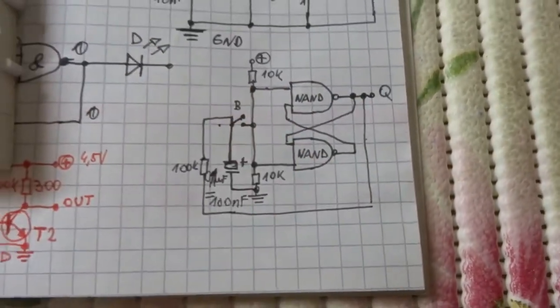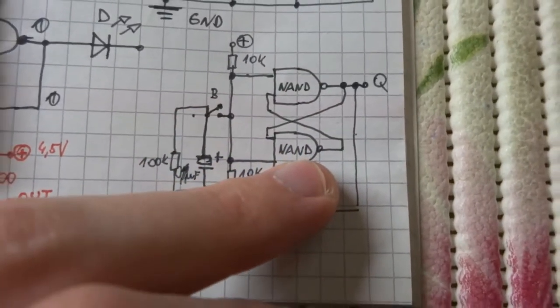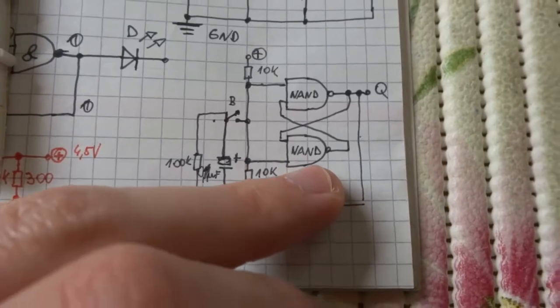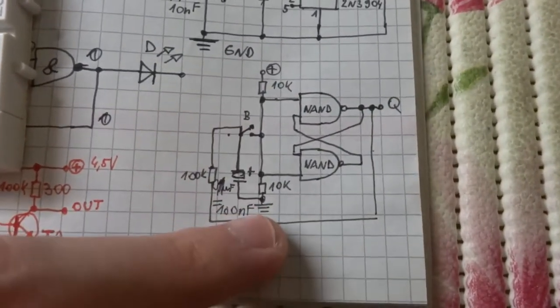So these two NAND gates represent a flip-flop circuit, classical flip-flop. Another is the toggle switch.